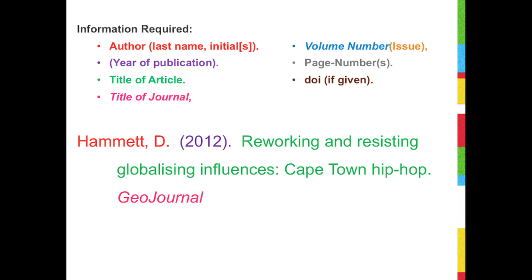Include the name of the journal in italics, comma, the volume number in italics, and include the issue number in brackets if present. Follow by a comma, add the page range, and finish with a period.